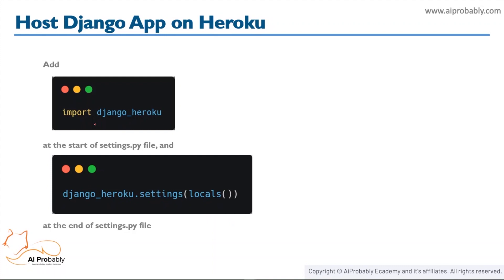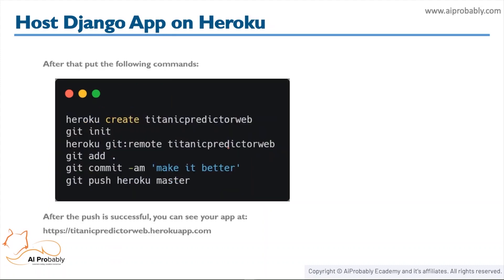After that we need to make some changes in the settings.py file. We need to import django_heroku in the settings.py file, and at the end of the settings.py file we need to add `django_heroku.settings(locals())`. What it does is it loads the local settings on Heroku.